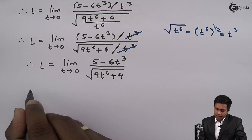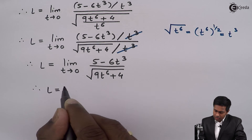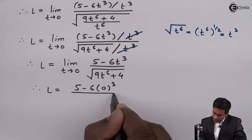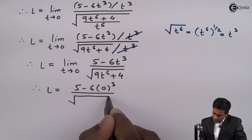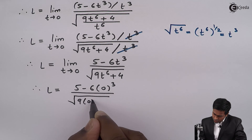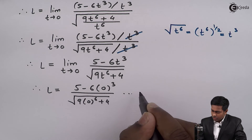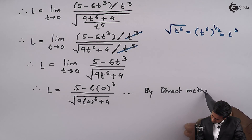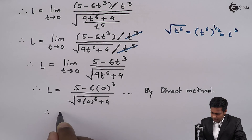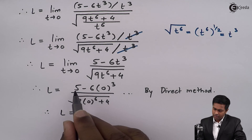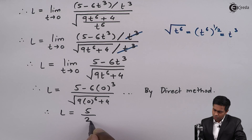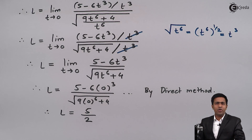Applying the direct method by substituting t = 0, we get (5 - 6·0³) upon √(9·0⁶ + 4), which gives 5 in the numerator and √4 equals 2 in the denominator. Hence the value of the limit is 5 upon 2. Thank you.